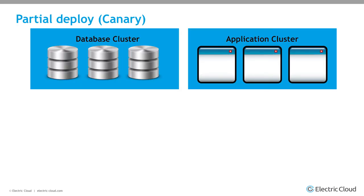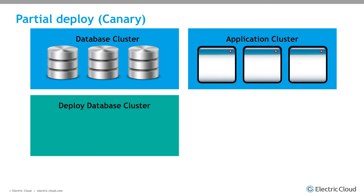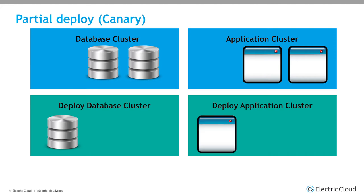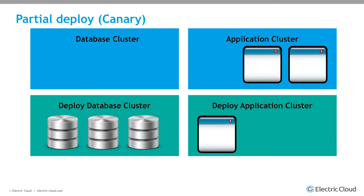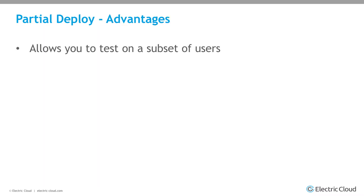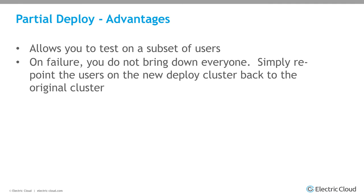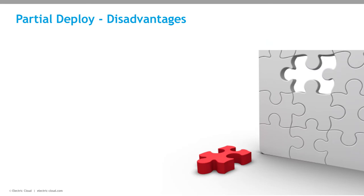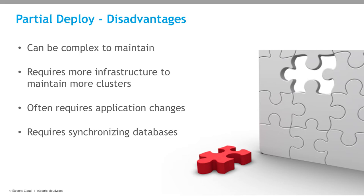Another strategy is a partial deployment — some people call it canary. You have your three nodes of your database cluster and three nodes of your application cluster. You take one and deploy to it, test, then take the application out, deploy to that, and test. Once you've determined it works, you deploy the rest of your database and application. The advantages: it lets you test on a subset of users, and on failure you don't bring everything down. The disadvantages: it's complex to maintain, requires more infrastructure, and often you'll have to make application changes too.